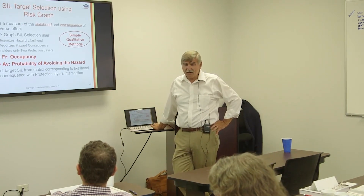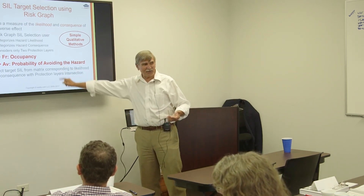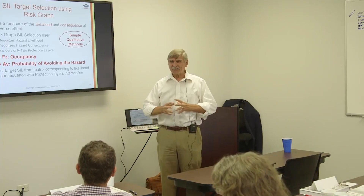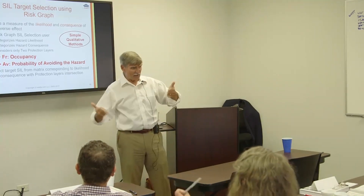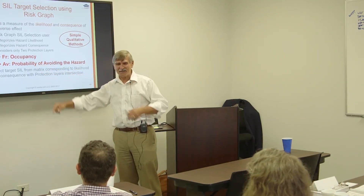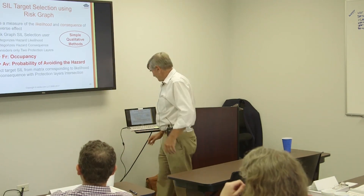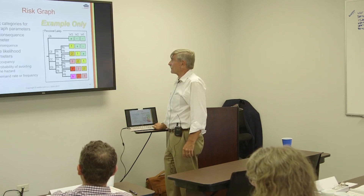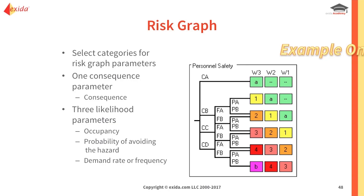It makes a lot of sense. If the machine's coming after you and you can run away, you've got a high probability of avoiding the hazard. If that robot arm swings around and nobody's there, nobody's going to be hurt or killed. This is what a risk graph looks like — you select your parameters and avoidance parameters, and you get a SIL level.